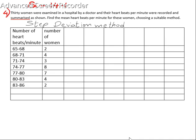Hi and hello everyone. Today we will discuss the third method of finding out mean, that is the step deviation method. I am taking Exercise 14.1, fourth sum: 30 women are examined in a hospital by a doctor and their heartbeats per minute were recorded and summarized as shown. Find the mean heartbeats per minute choosing a suitable method. So here I am taking the step deviation method.